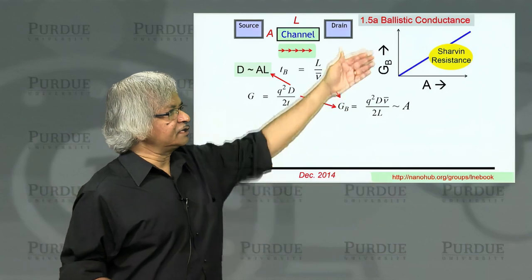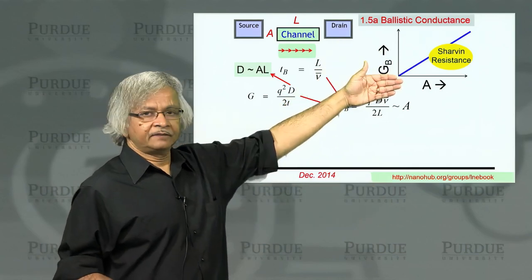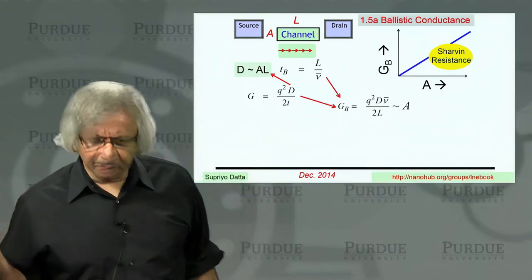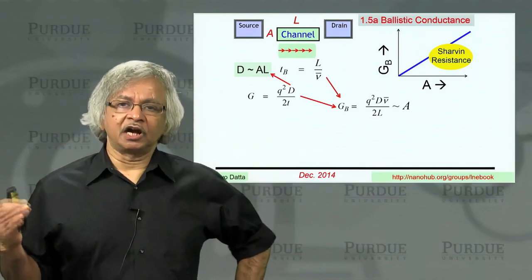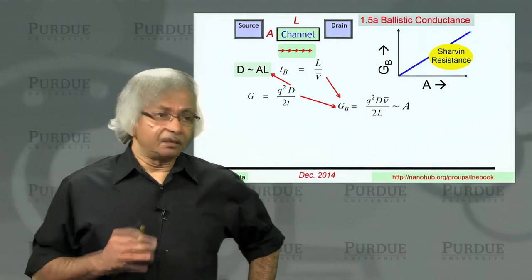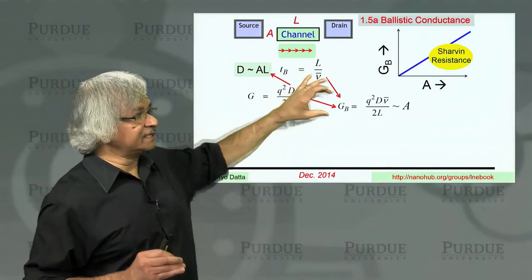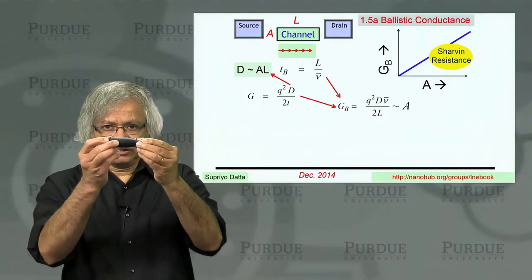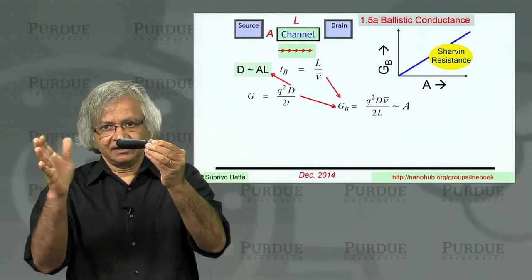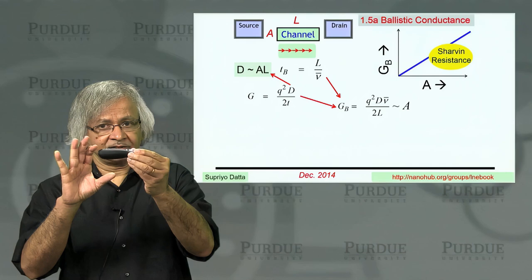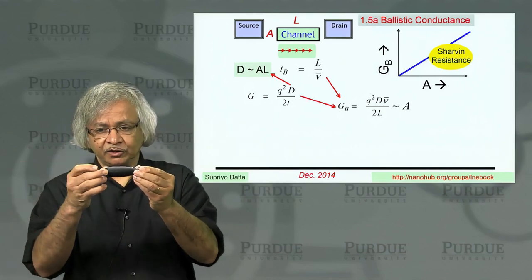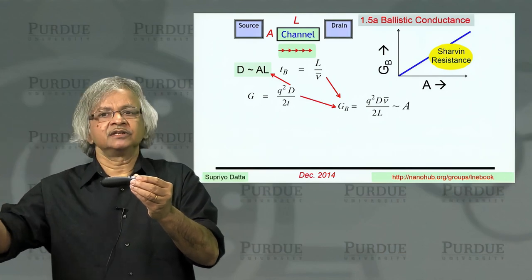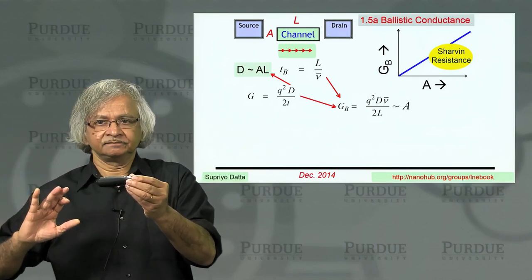So if you plotted it, it would look something like this. And this was observed back in around 1969. And it's often called the Sharvin resistance. The point to note here is that this ballistic conductance is independent of the length. You could take a ballistic conductor, make it twice as big, it's still the same ballistic conductance, which is very different from normal conductors, where if you make something twice as long, the resistance is twice as much, conductance is half as much.